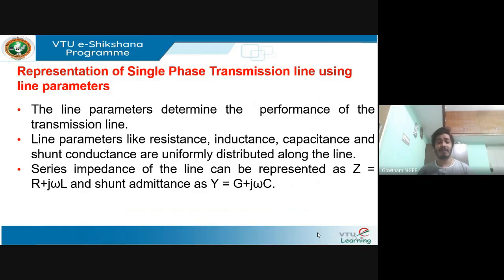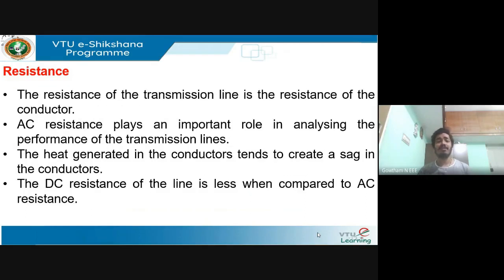Why are they called distributed parameters? Because you need to consider their effect throughout the length of the line — that is the reason they are called distributed parameters. Their values will definitely impact the performance of the transmission line. Since R and L are connected in series, it gives rise to series impedance: Z = R + jωL. The shunt parameters — capacitance and conductance — give rise to shunt admittance. Let's now look at the individual parameters of a transmission line, starting with resistance.